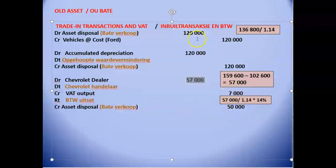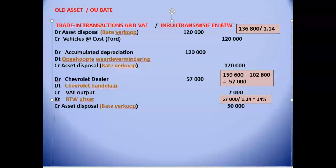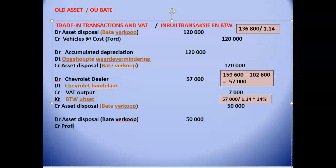There is a debit of $120,000 and a credit of $120,000 in the asset disposal account. To clear it, we debit that account with the proceeds of $50,000 and credit profit on disposal of the vehicle with $50,000 to balance off the account. The full amount received is profit because the asset was carried in our books at zero value, and we are done with the old asset.